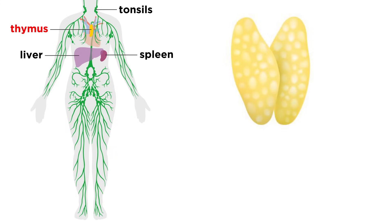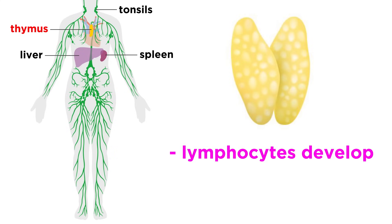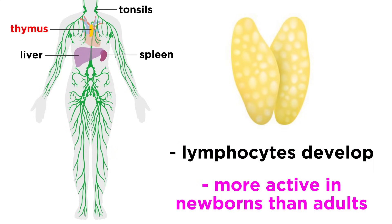The next lymphoid organ is the thymus, which is found in the thorax just below the neck. This is where certain lymphocytes develop, and it is more active in newborns than in adults.